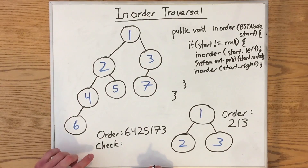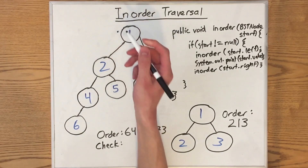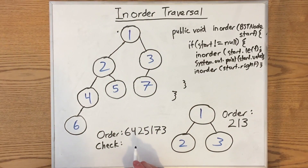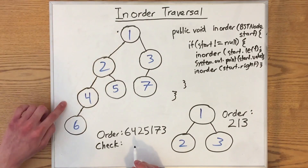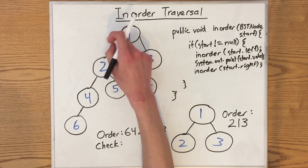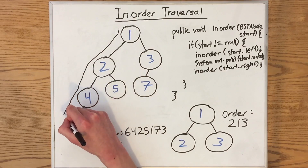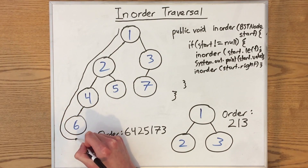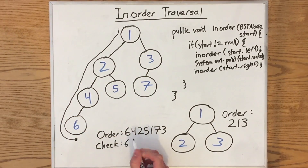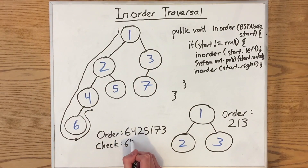One thing you might notice is that we also have a graphical method to check for this one as well. So we start out over here on this side as usual. But this time, instead of printing out the value every time we pass by on the left side, we print out the value of the node every time we go under. So let's start on the left side again. We go down as far as possible. Over here, we finally pass by under 6. So we print out 6. Then we go up as far as possible. Pass by under 4. So we print out 4.